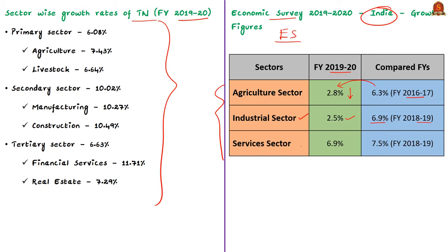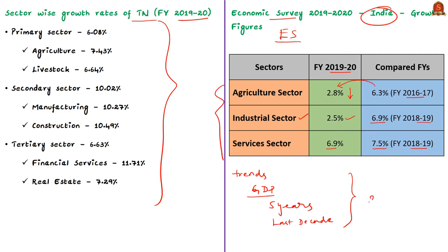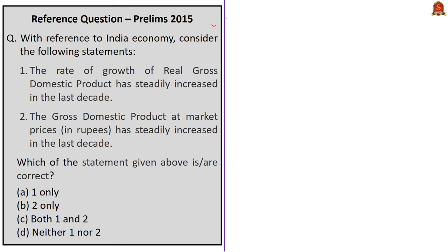The service sector is estimated to grow at 6.9% in 2019-20 as compared to 7.5% in 2018-19. In the context of this news article, try to remember the actual trends of GDP at constant prices and also at market prices over the past five years or in the last decade. These trends are important for your exam because there is a relevant previous question based on the trends of GDP in the 2015 UPSC prelims exam. With this information, let us move on to the practice question session.